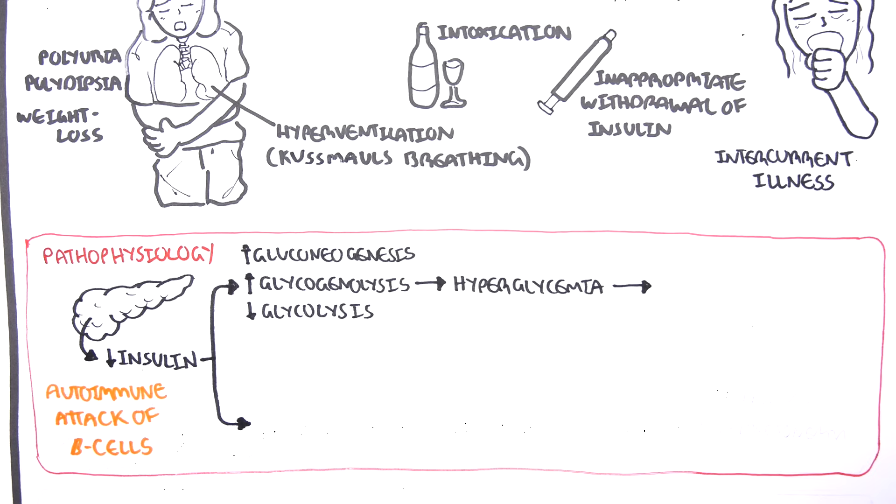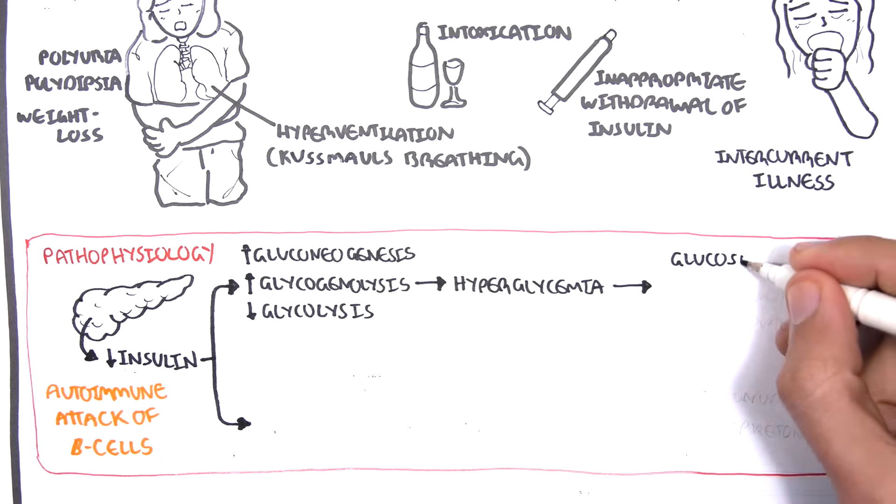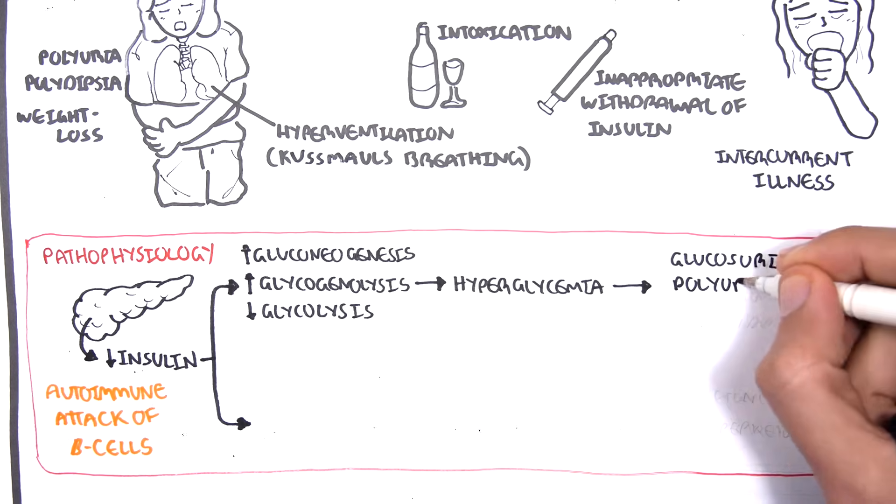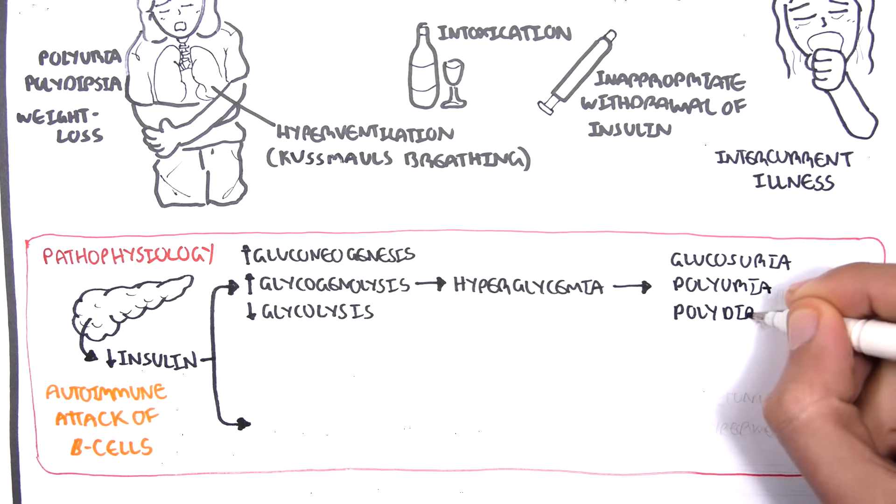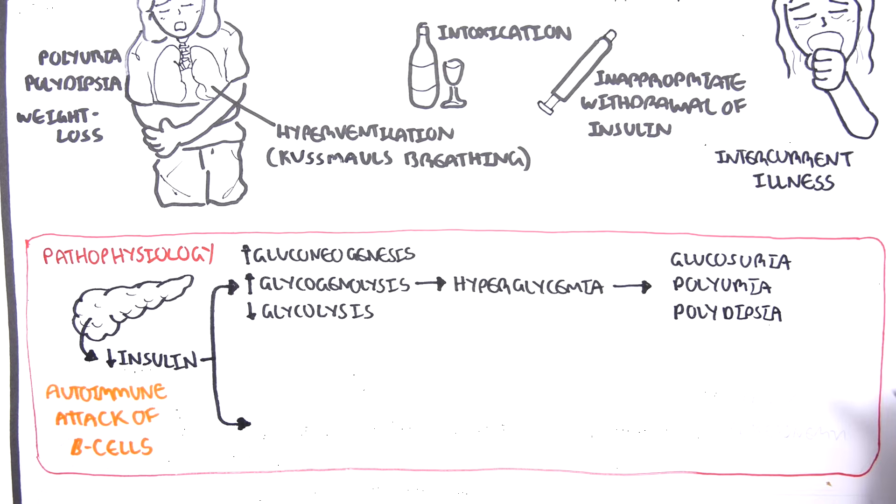Hyperglycemia results in glucose being peed out. So we get glucosuria. Glucose draws water. So we get polyuria. And we also get dehydration as a result. Because we lose a lot of water and we are dehydrated, we get polydipsia. We get thirsty.